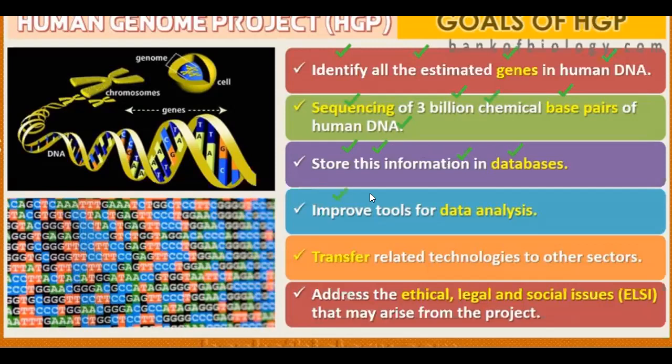Another goal was to improve tools for data analysis. First, we removed the structure of the nucleotides and information, then stored it in databases. You can go to the NCBI site — National Institute of Health NIH databases — and if there is any gene, you will get information from that gene. So we improved all the data analysis tools.